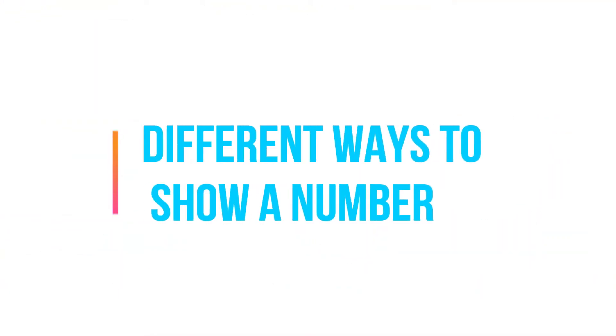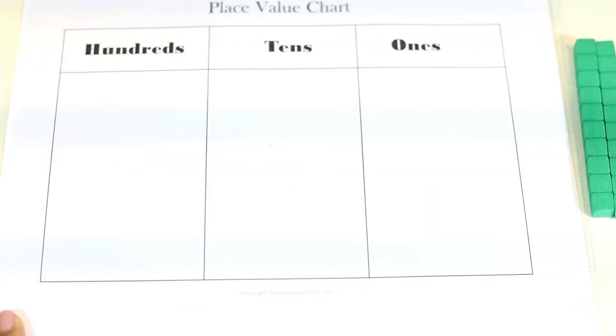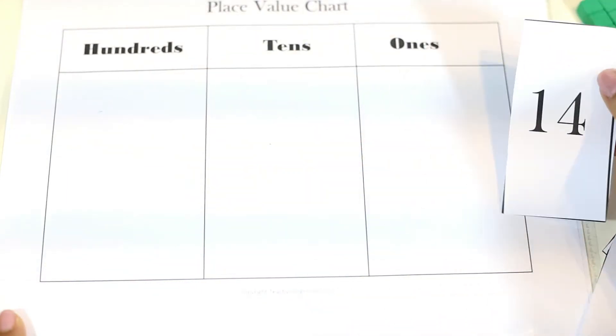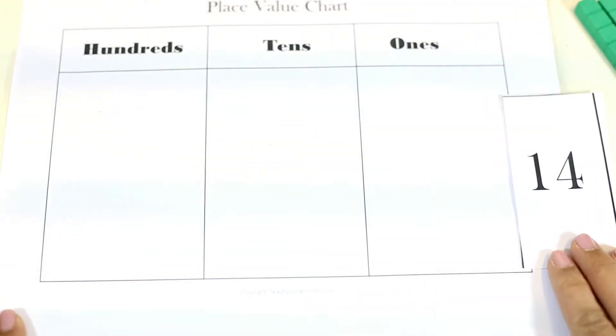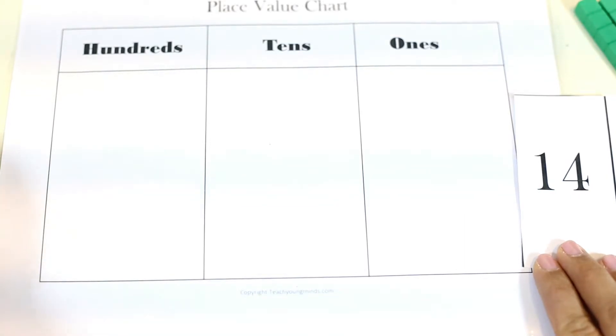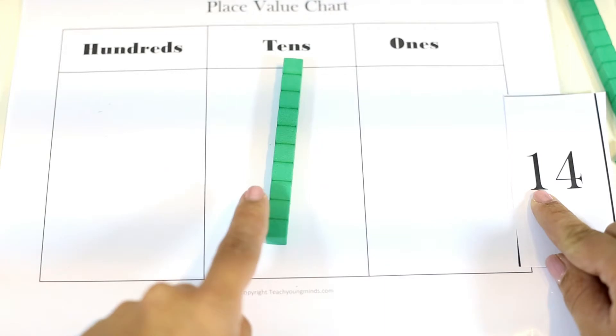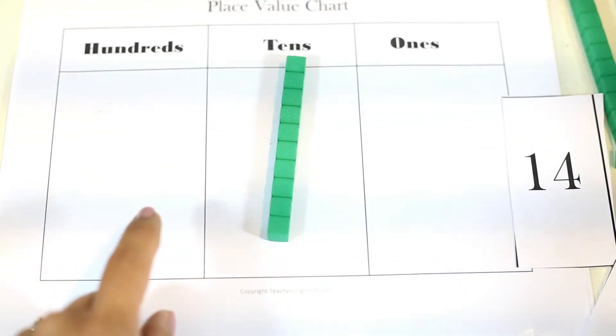The next activity is similar to building numbers, but it is showing the number in a different way. Say, for example, I have the number, let's do a simple number, 14. And I want them to build 14. So that's 1 ten and 4 ones.